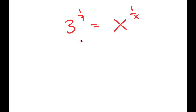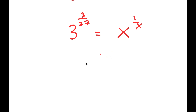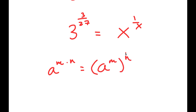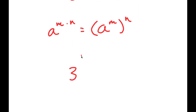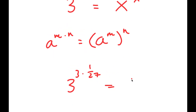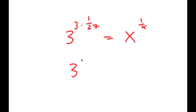Now from here, 1 over 9 is the same thing as 3 over 27. And remember, in the form a to the power of m times n, this is equal to a to the power of m to the power of n. So we can rewrite 3 over 27 as 3 to the power of 3 times 1 over 27, and now reversing this property, we write this as 3 to the power of 3 to the power of 1 over 27.